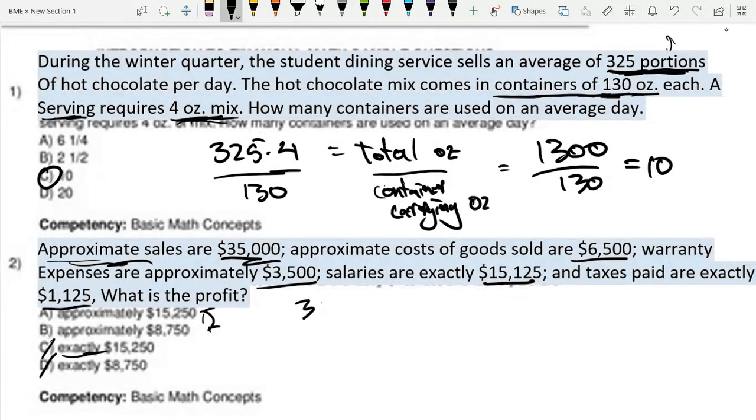We have $35,000 in sales and this is our sale profit. Now we have to subtract our cost of goods. Let me do a subtract column over here and I'll do it all on my calculator. They will give you a calculator for this test, at least in my experience. Warranty expenses are approximately $3,500. So this is an expense. If you see the word expense, it's almost always not going to be profit.